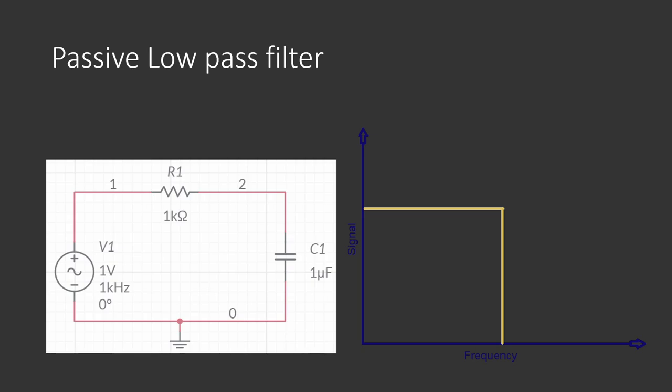Low-pass means it passes low frequencies but blocks high ones. In this circuit, we have an alternating current supply of one volt, as well as a one kiloohm resistor and a one microfarad capacitor. The graph on the right here is what we would like to see in the ideal world as far as frequency response, so it passes the low frequencies but blocks the high ones.